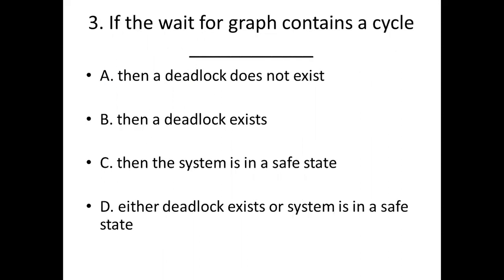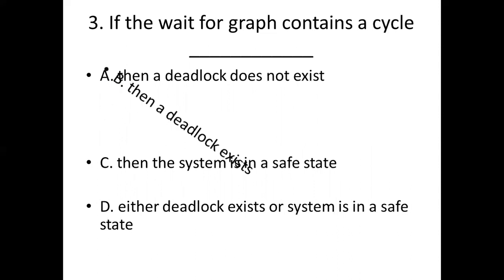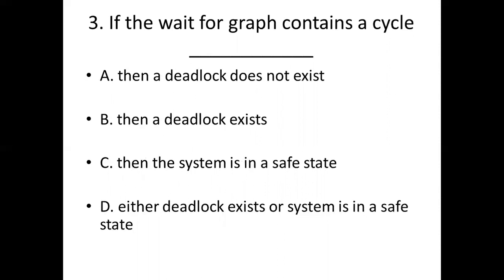Third bit: If the wait-for graph contains a cycle — Option A: Then a deadlock does not exist. Option B: Then a deadlock exists. Option C: Then the system is in a safe state. Option D: Either deadlock exists or the system is in a safe state. Answer: Option B — Then a deadlock exists.